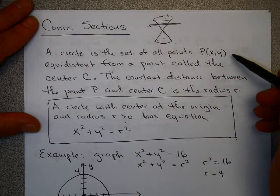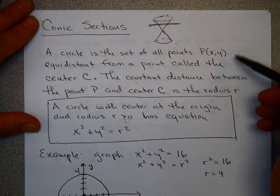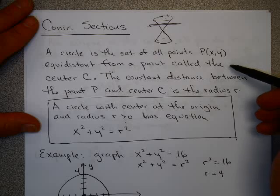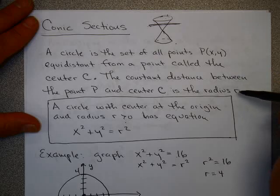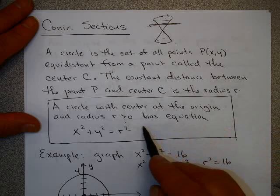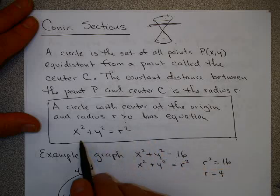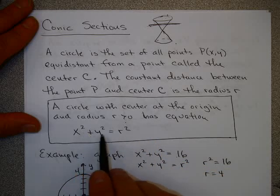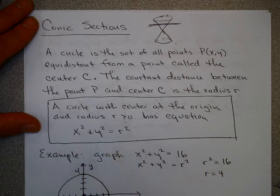What is a circle? A circle is a set of all points P(x, y) equidistant from a point called the center. The constant distance between the point and the center is called the radius. A circle with the center at the origin and a radius r greater than zero has the equation x squared plus y squared equals r squared.